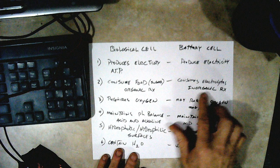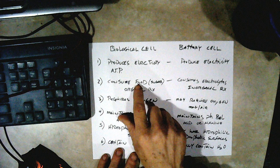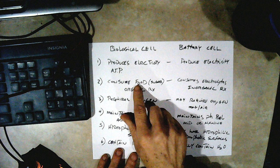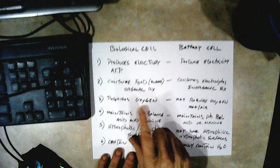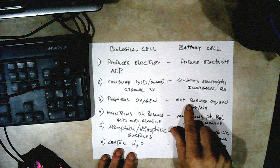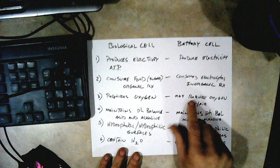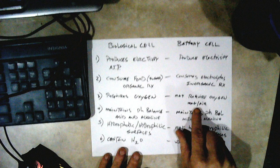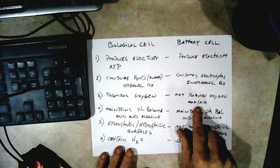This is the main difference between the biocell on the biological side and the regular battery cell. Biological cells also require oxygen. Battery cells may or may not require oxygen — the magnesium-air battery is an example of a battery that does require oxygen.